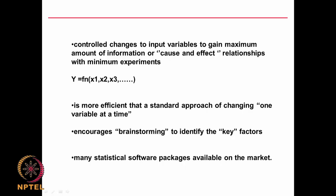We make controlled changes to input variables to gain maximum amount of information — this is called a cause-effect relationship. We need to perform design of experiments so that we can develop regression relationships. We will talk about regression also later. We want to develop equations like: yield of my desired product equals a function of various input parameters such as temperature, pressure, dissolved oxygen, and so on. The relation may be linear, non-linear, or anything.